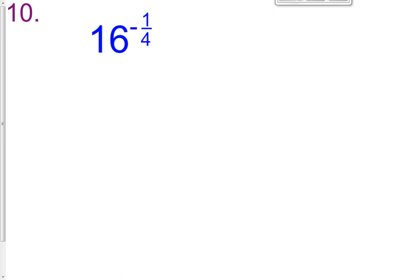So that leads us here into number 10. We have 16 raised to the negative 1 fourth, so I can't have negative exponents, so I'm going to make that as 1 over 16 raised to the positive 1 fourth. The directions say to evaluate each expression. Notice how problems 10 through 14 have no variables — they're all numbers raised to an exponent, so they're all going to be simplified to a rational number, meaning a fraction or a whole number. We're not going to have any radicals in our answers for these.